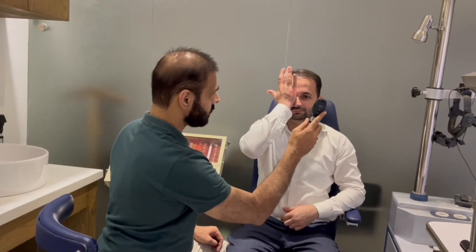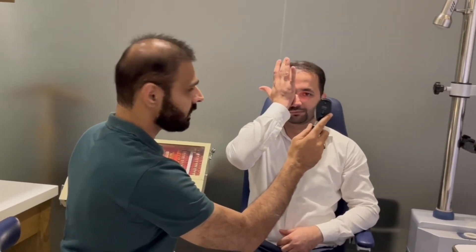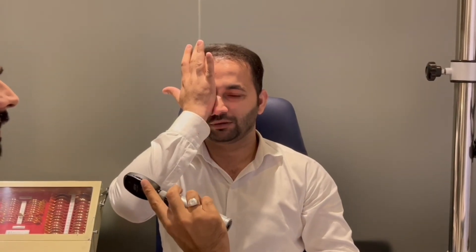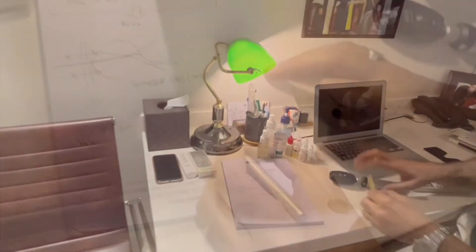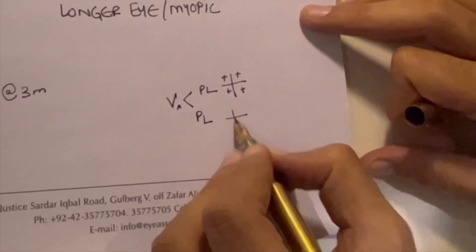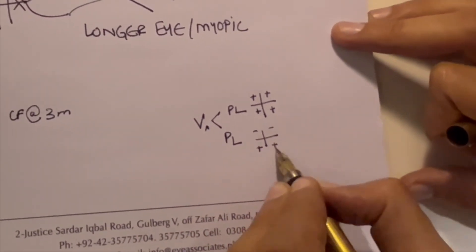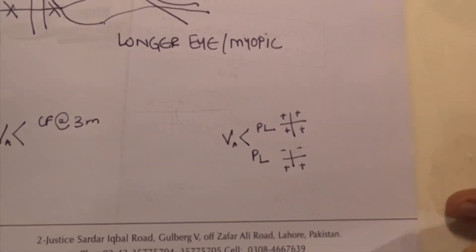I shine the light again and test each of the four quadrants. In this demonstration, the patient can see the light in some positions but cannot see it in the upper quadrant. I write this as perception of light with faulty projection in the upper two quadrants and positive projection in the lower two quadrants.